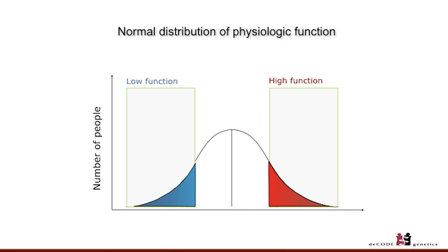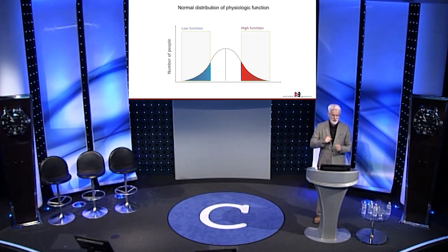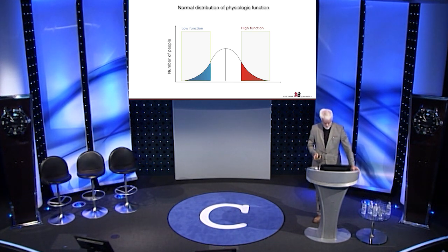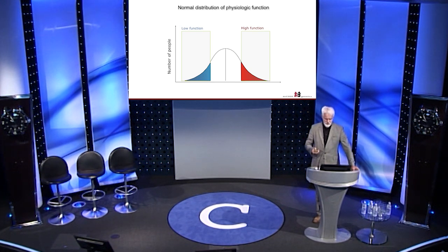The common variants place us on a normal distribution curve of physiological function. If you are at one end of the normal distribution, you are at risk of a disease; if you are at the other end, you are protected against the same. Each common variant confers relatively little risk, but a confluence of common variants can confer a very large genetic risk of a disease, although they account for very little heritability. Then you have the rare variants that disrupt the same physiological function and cause disease through an entirely different mechanism. At deCODE we have discovered a very large number of both common and rare variants that affect all kinds of phenotypes.